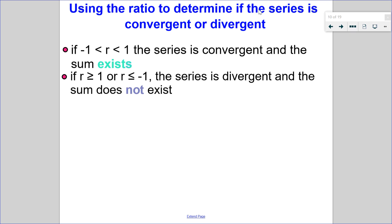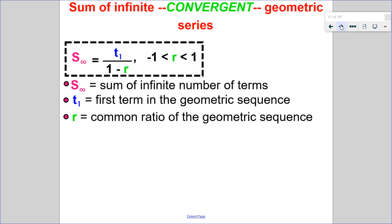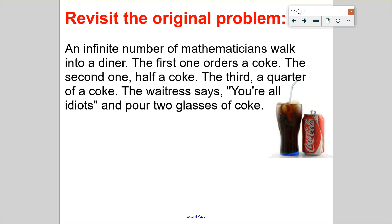So we can use our ratio to determine if the series is convergent or divergent. If the ratio is between negative 1 and 1, it's convergent and the sum exists. But if the ratio is greater than or equal to 1, or less than or equal to negative 1, the series is divergent and the sum does not exist. Here's how I figure out the sum of a convergent geometric series: to find the sum of an infinite number of terms, I just take my first term and divide it by 1 minus the ratio.